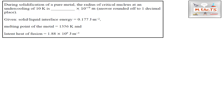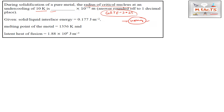Hello and welcome to our YouTube channel Metallurgical Facts. This question is from GATE 2022, asked by one of the students. The question is: during solidification of a pure metal, the radius of the critical nucleus at an undercooling of 10 Kelvin is how much? So basically they are asking about the radius of the critical nucleus. This question is related to homogeneous nucleation.